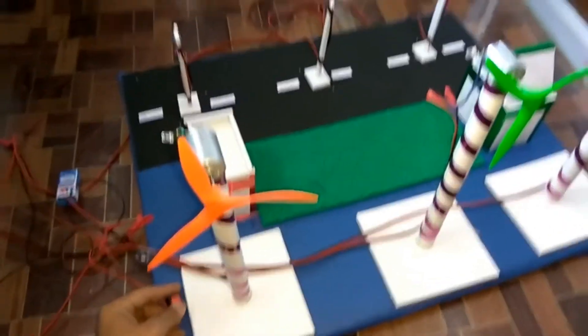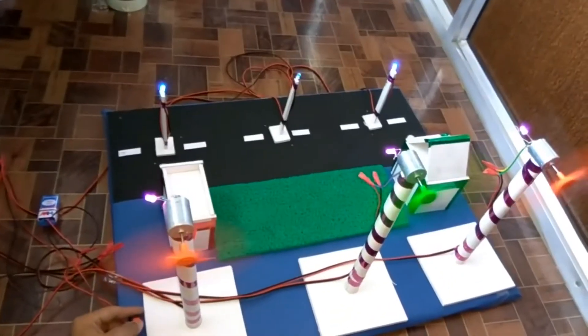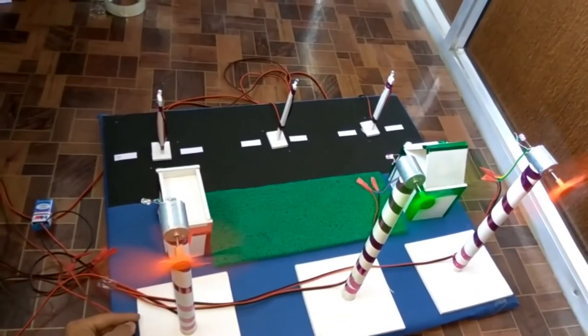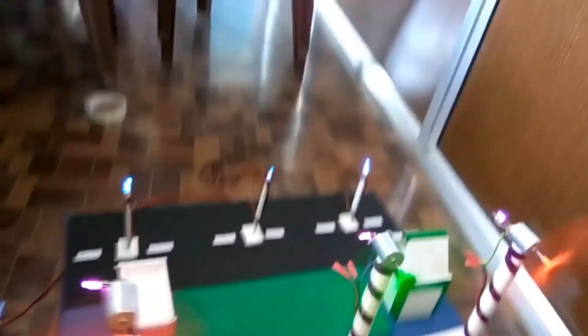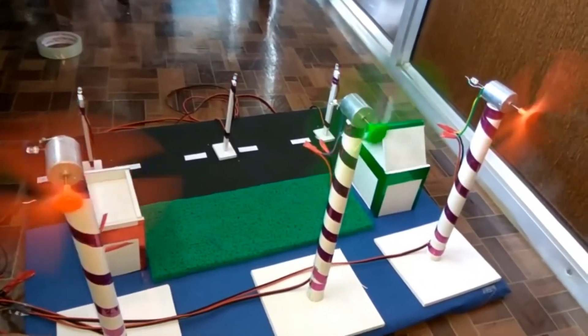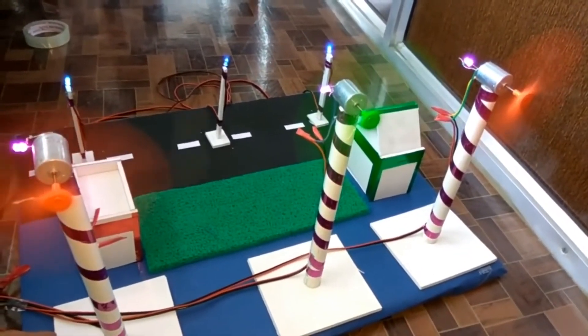As you can see in this video when we connect it to the battery and turn on the switch, the wind turbines are rotating and store the electricity into our street lights. Thank you guys, if you like the video kindly subscribe my channel.